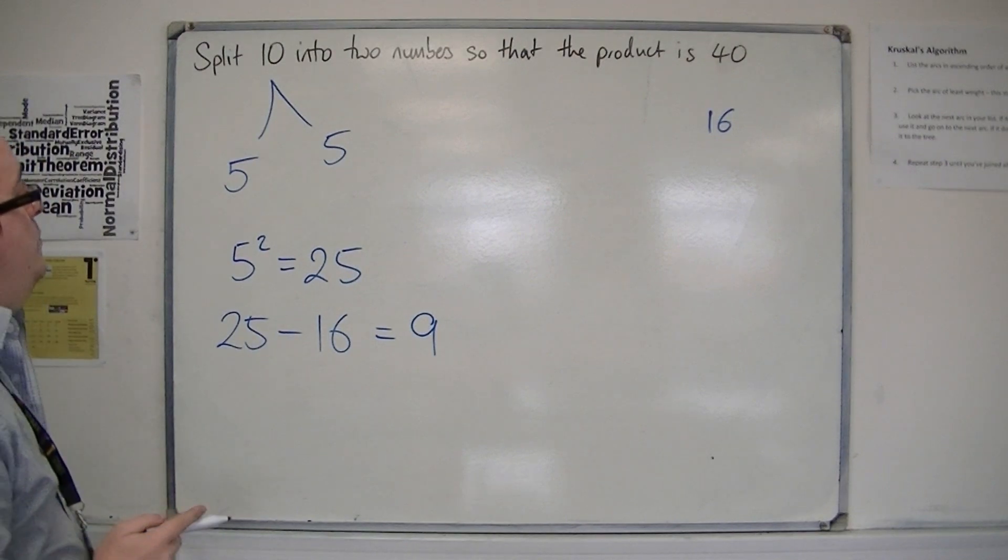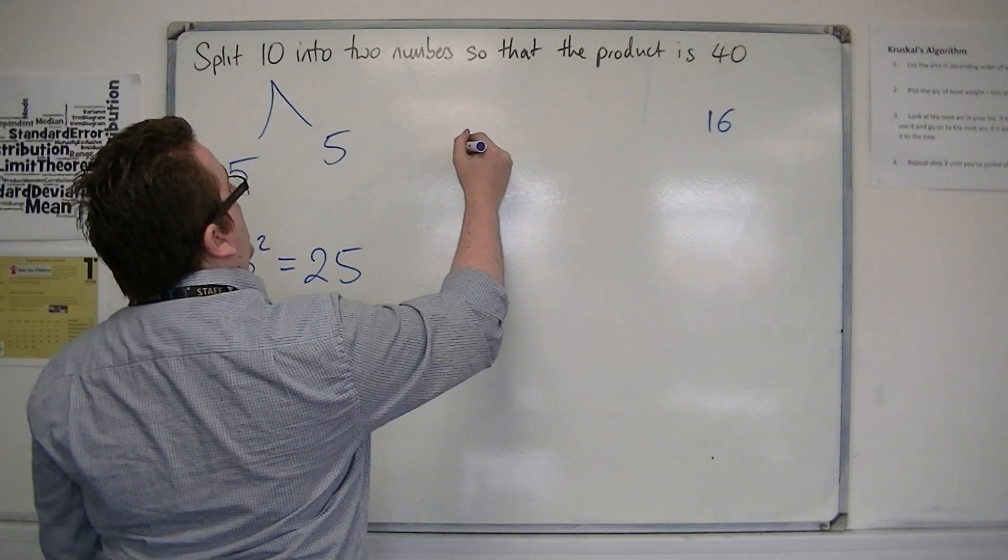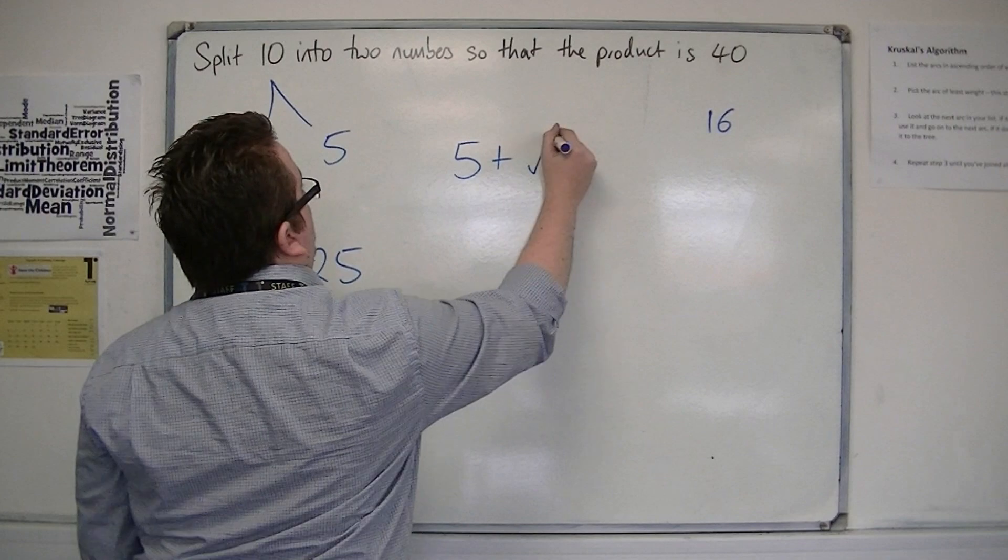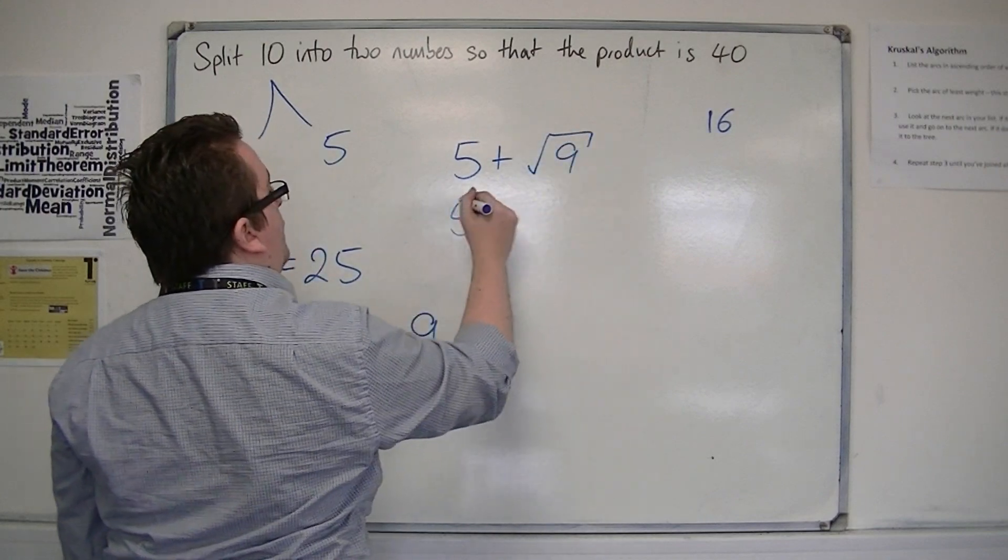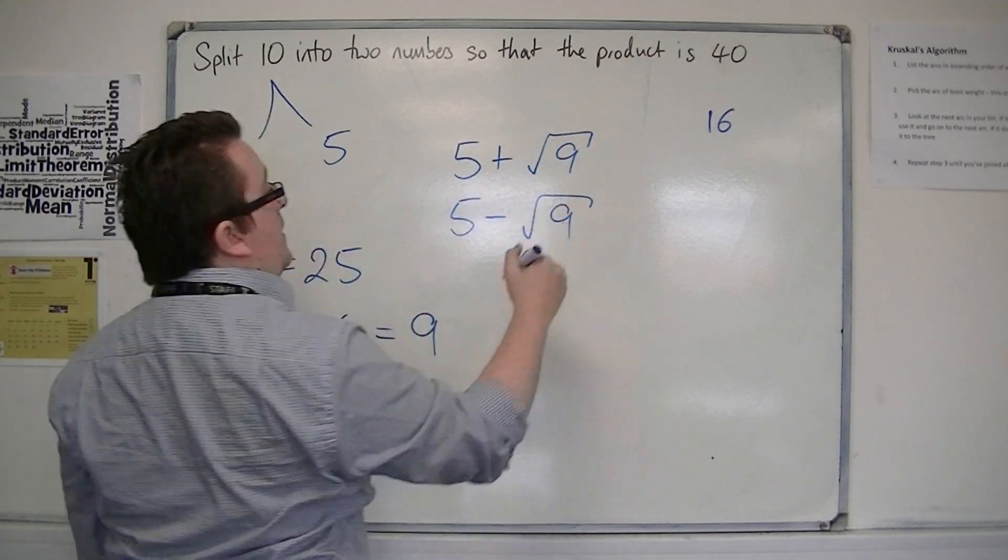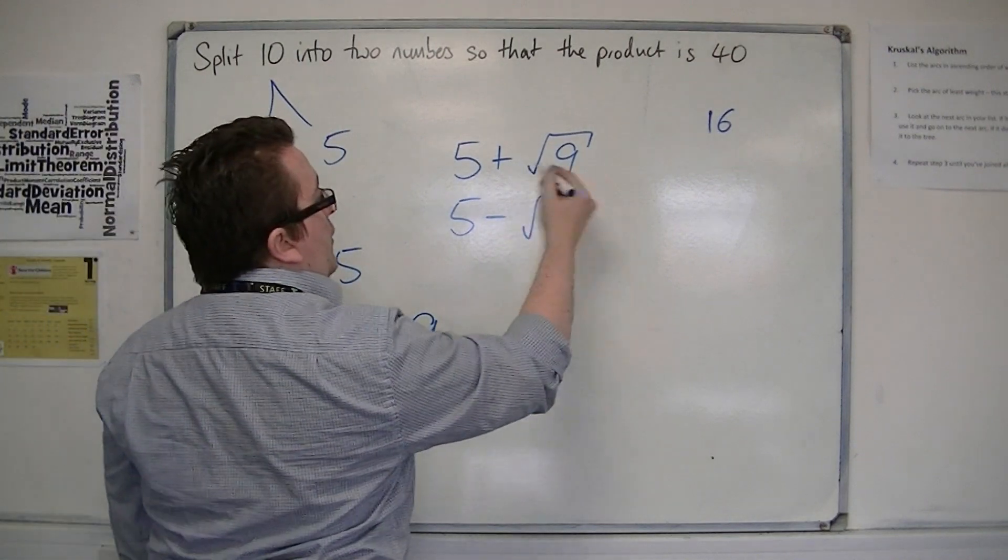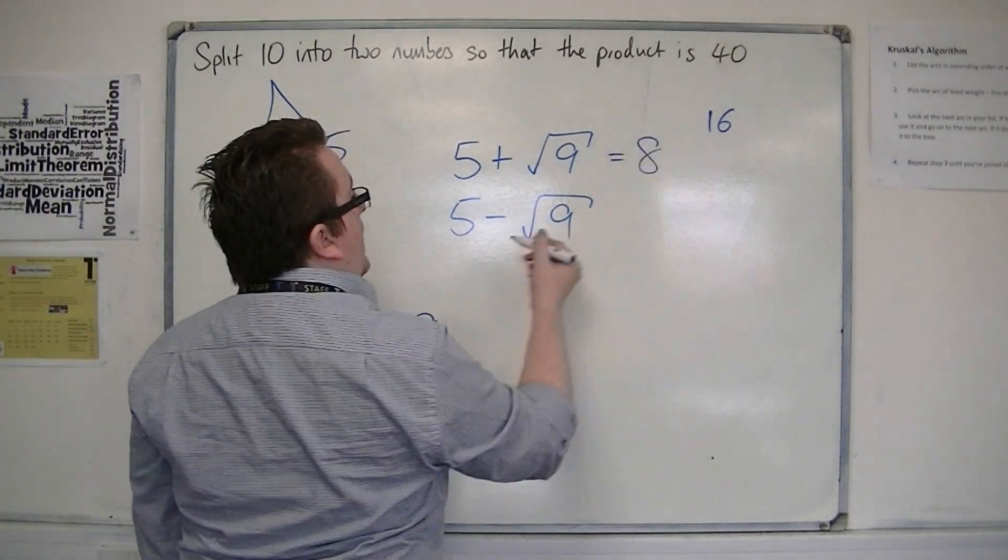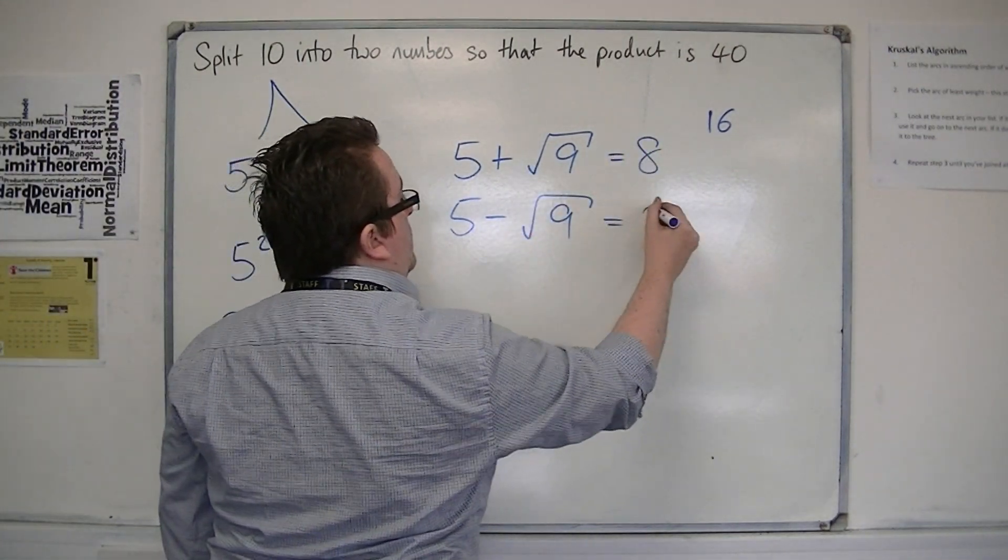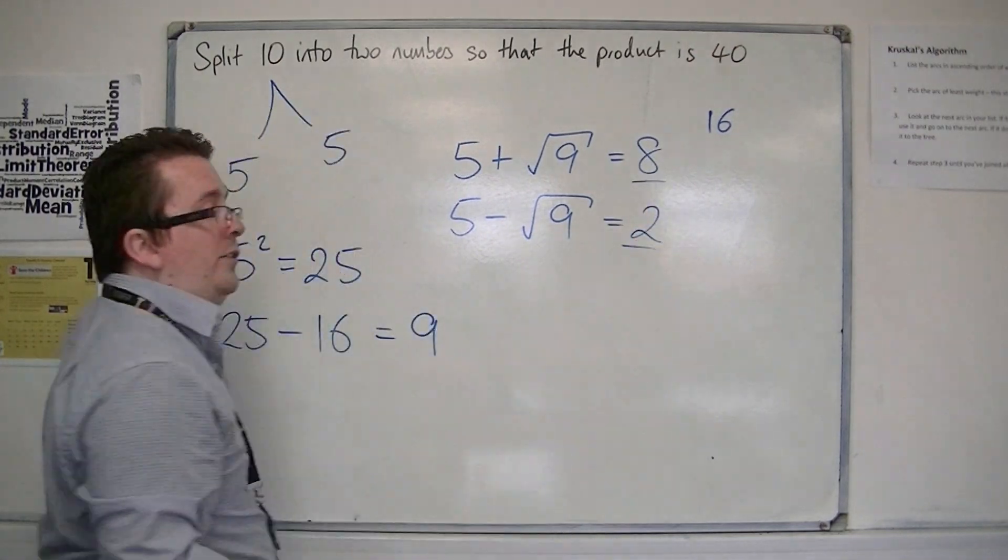So then the two numbers that you're looking for are 5 plus the square root of 9 and 5 take away the square root of 9. That's 5 plus 3 is 8 and 5 minus 3 is 2. So they're the two numbers that I was looking for.